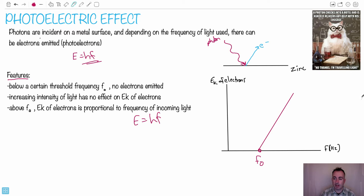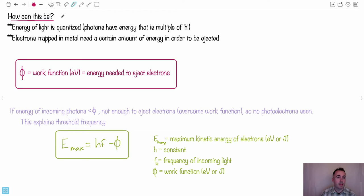So along came a really clever guy by the name of Einstein, I'm sure you've heard of him. He figured out the reason, among other things. First of all, the energy of light is quantized. That means photons have energy that's a multiple of H. That's why we have that equation E equals HF. Now we have electrons. His idea was that the electrons must be trapped in the metal and they're being held, they're being bound in the metal by some sort of energy. We call that energy the work function φ, measured in electron volts usually or joules. Basically it's the energy needed to eject the electrons.